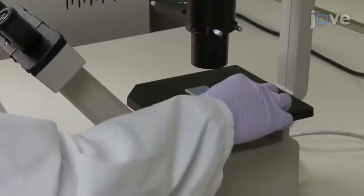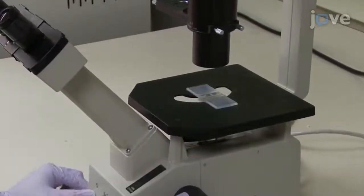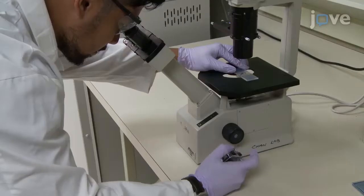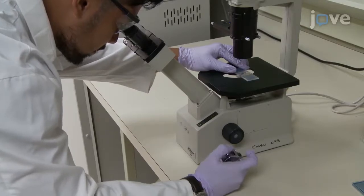After preparing human macrophages and apoptotic Jurkat cells, use a hemocytometer to count the apoptotic cells.